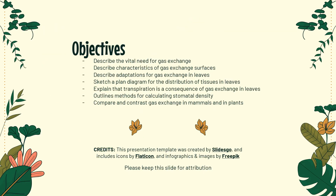We have now achieved all of our objectives. We talked about the vital need for gas exchange — CO2 for photosynthesis and oxygen for respiration. We talked about characteristics of gas exchange surfaces: thin, moist, permeable, with lots of surface area. Adaptations in leaves include the spongy mesophyll and stomata with guard cells. We covered plan diagrams showing tissue distribution, transpiration as the consequence of gas exchange, calculating stomatal density, and comparing and contrasting gas exchange in mammals and plants. Great work today!